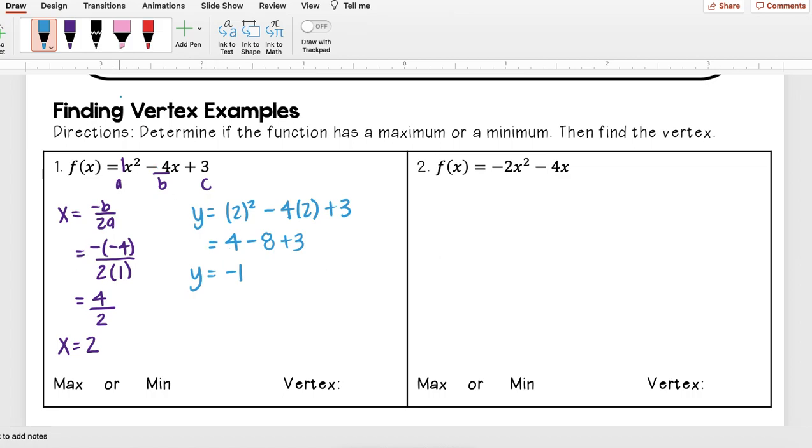So I got my x value, I got my y value. To find my vertex, I'm just going to put those together. So my x term needs to go first, so 2. And then my y, which is -1. So the vertex is (2, -1).